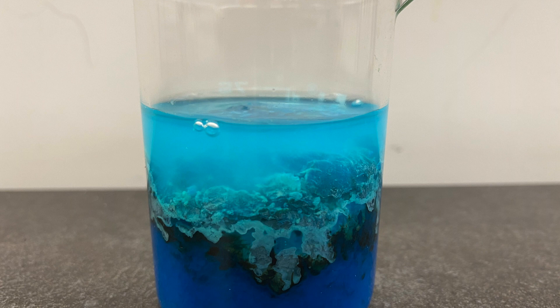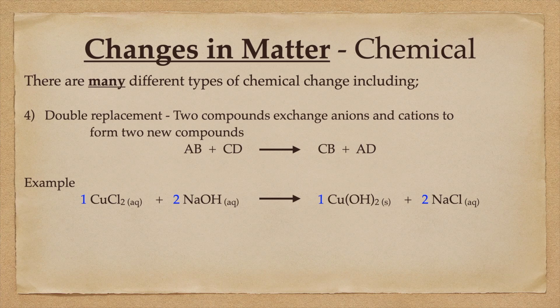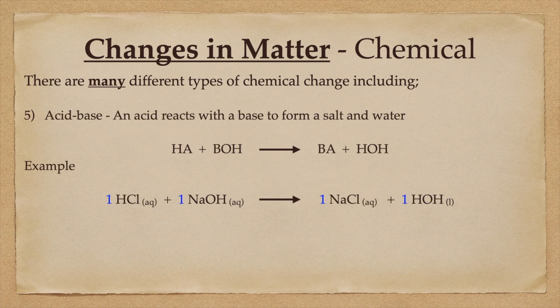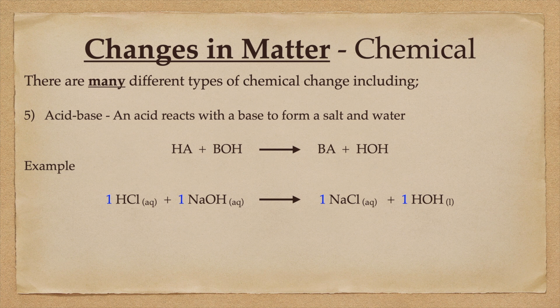The fifth kind of reaction, acid-base reactions, involves a compound containing H+ and a second compound containing OH-. This produces salt and water. Unfortunately for demonstration purposes, this is usually a clear, colorless solution reacting with a clear, colorless solution to make, well, a clear, colorless solution.